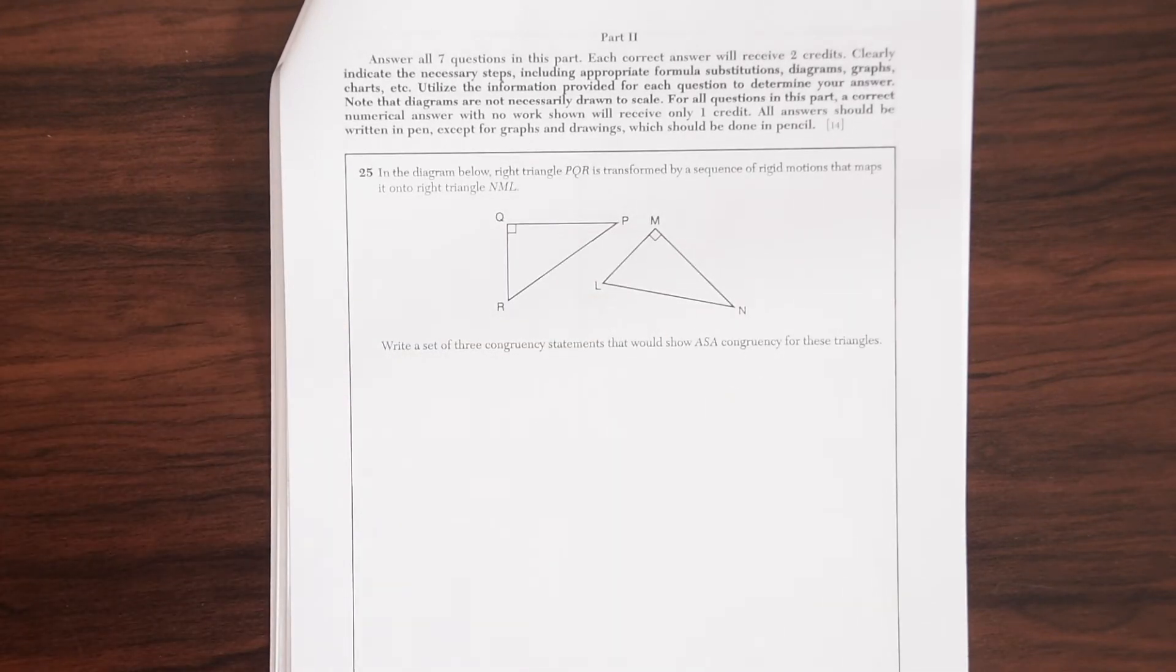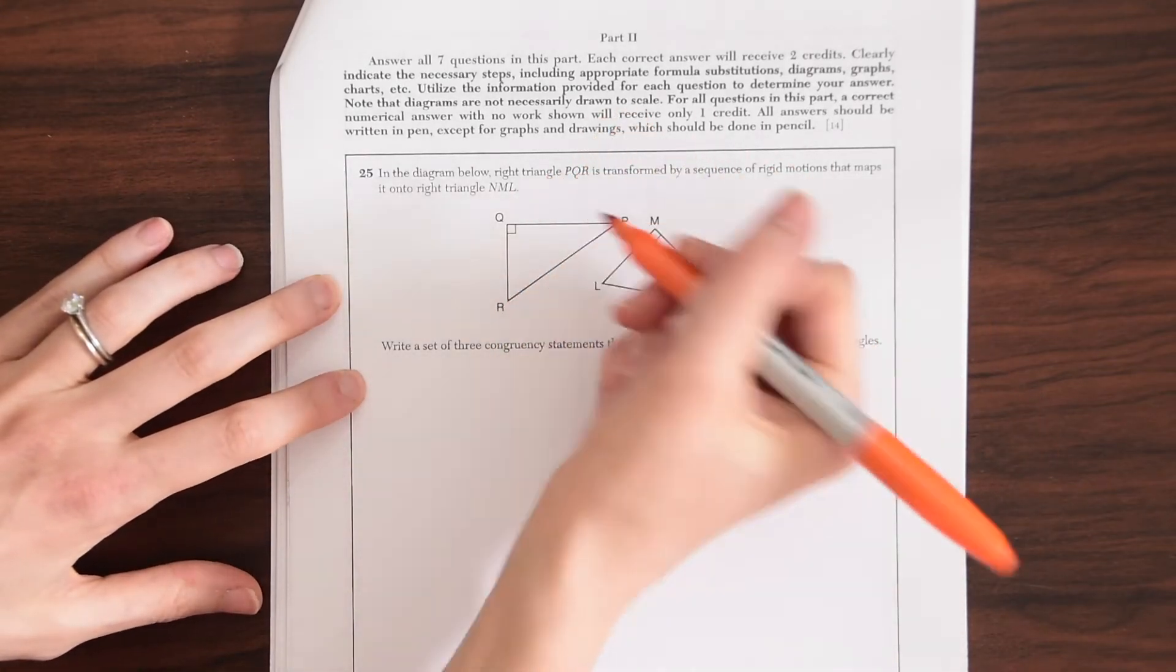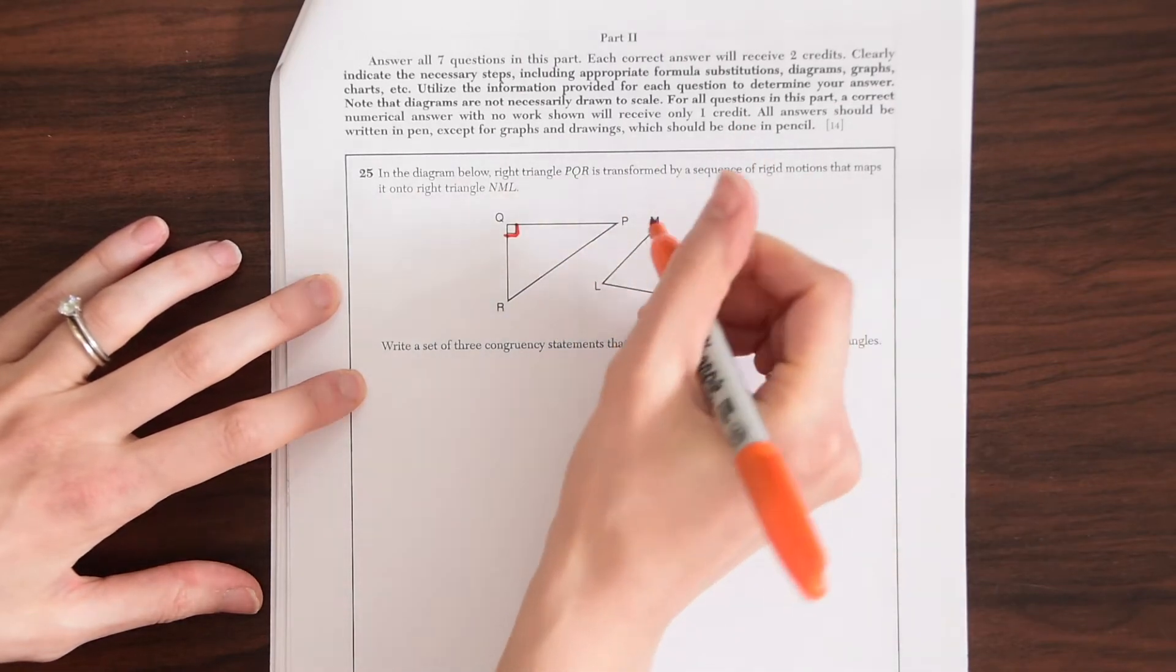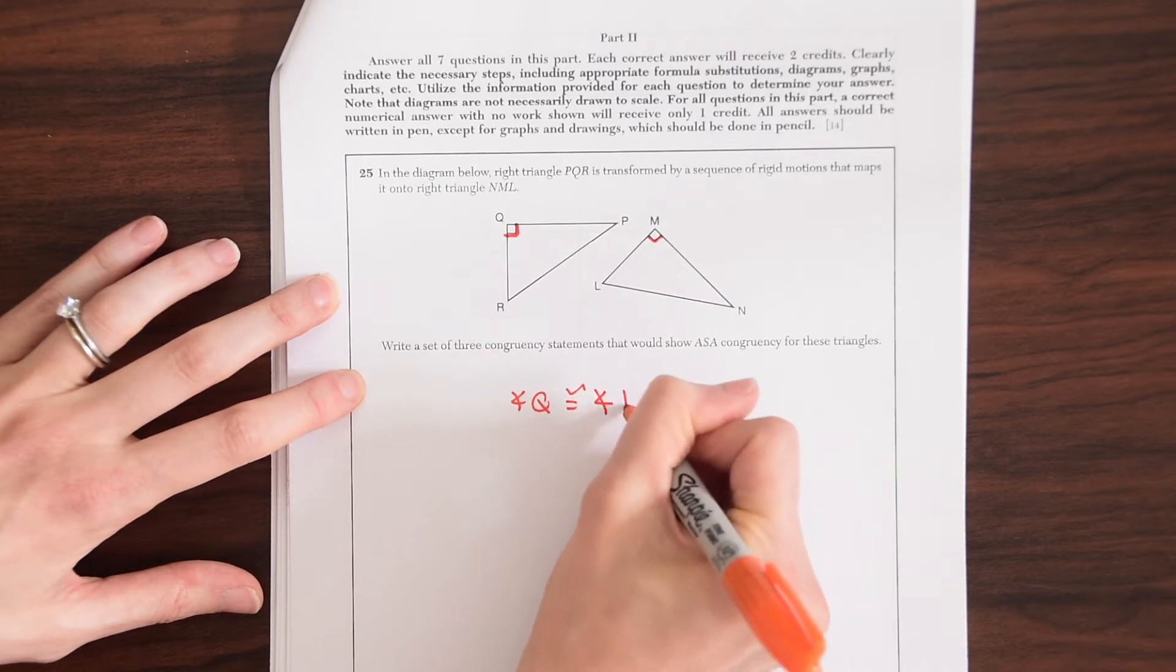So to get angle-side-angle we could start with the right angles. We could see that those are congruent to each other. So we could say angle Q is congruent to angle M.